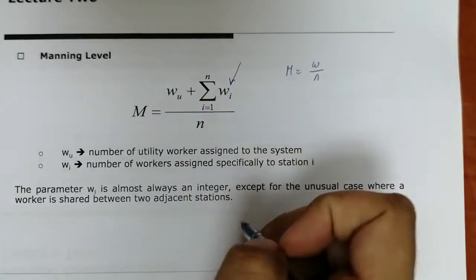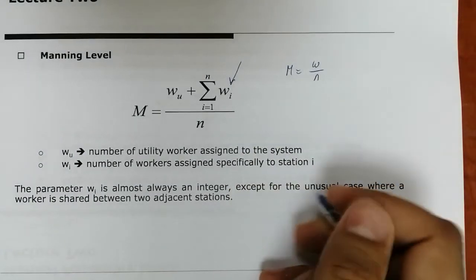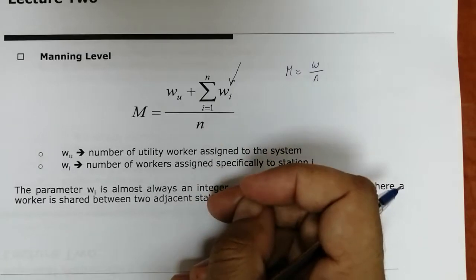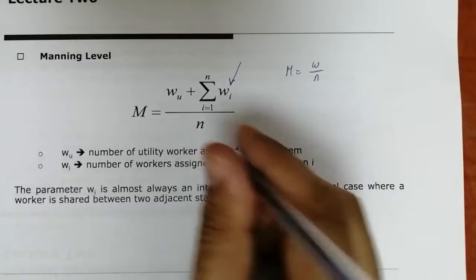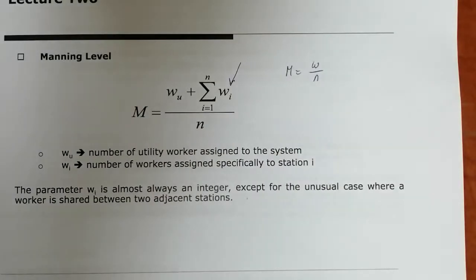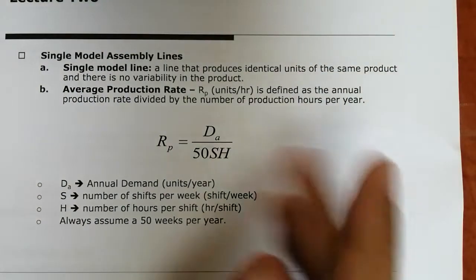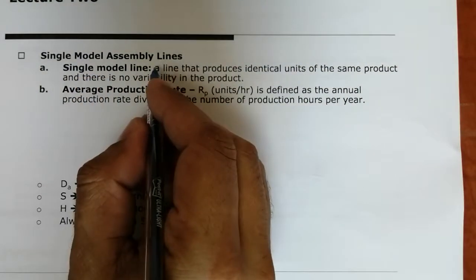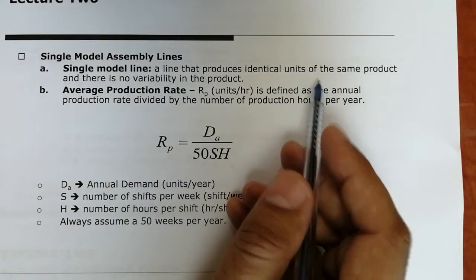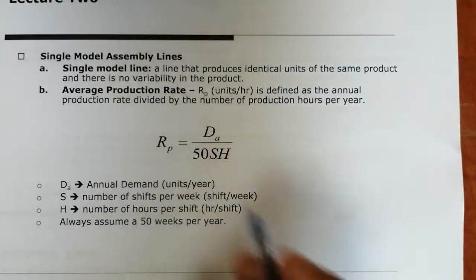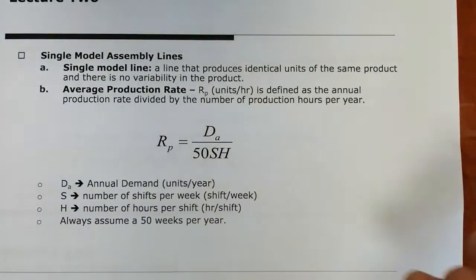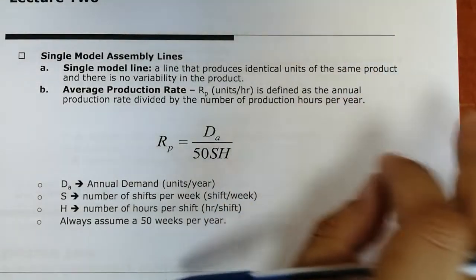W is always an integer, except for the unusual case where one worker is shared between two adjacent stations. As a rule of thumb, the easiest way is to sum up the total number of utility workers over the whole line. We're going to consider a single model assembly line — a line that produces identical units of the same product with no variability.